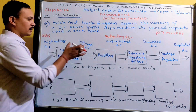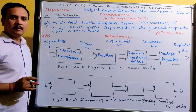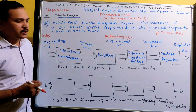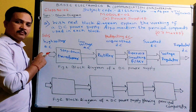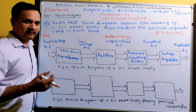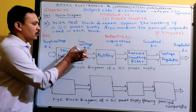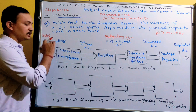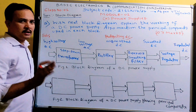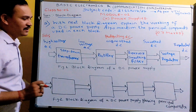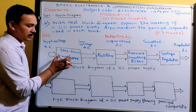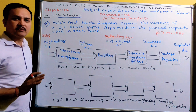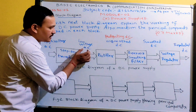Now I want to convert this high voltage AC into low voltage AC. For that the suitable component is a step-down transformer. With a suitable turns ratio in a transformer, we can get the required output in the secondary winding — either more or less than the primary winding voltage. Since we need low voltage, we use a step-down transformer. It converts high voltage AC into low voltage AC with a suitable turns ratio.